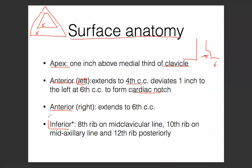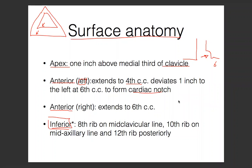The inferior border is the one that actually matters because it has the most questions. The inferior border of the pleura is curved, not straight. At each level it hits a specific rib level. At the mid-clavicular line, it'll be at the 8th rib. At the mid-axillary line, it'll be at the 10th rib. And posteriorly at the back, it'll be at the 12th rib. So you always memorize it as 8, 10, 12.